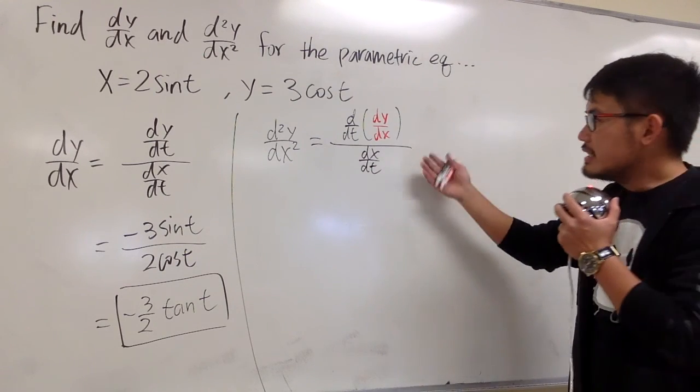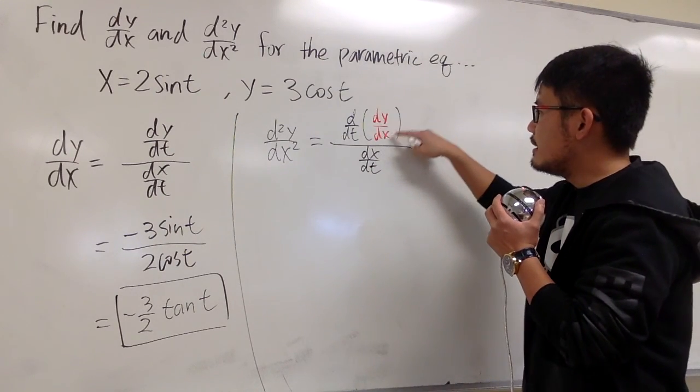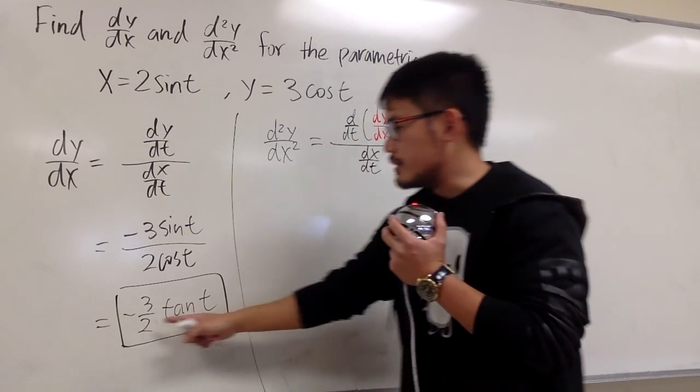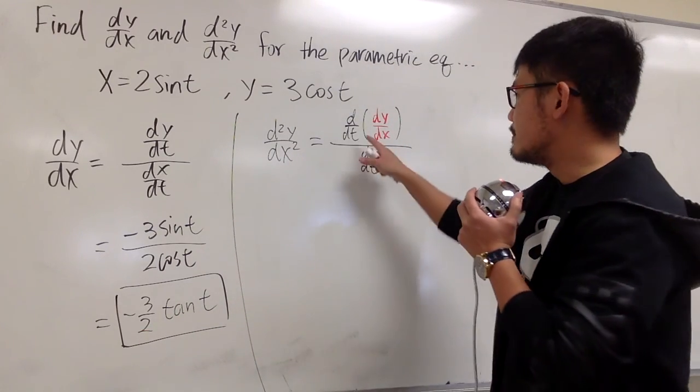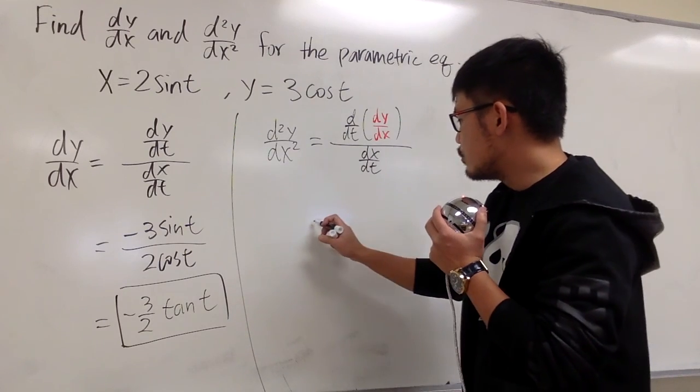So what does this mean? This means that we have to look at the dy/dx expression, which is this one that we got earlier, and do the derivative with respect to t. So let's do that first.